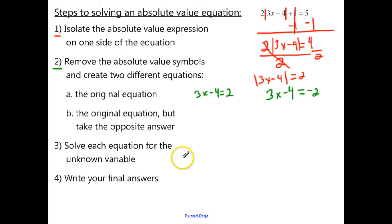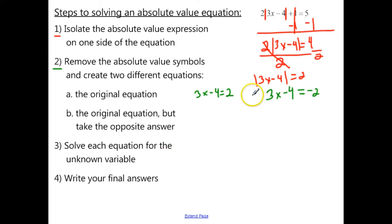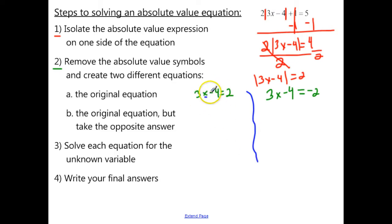Now let's move into step number 3: solve each equation for the unknown variable. I'm going to solve these equations separately. To solve for x in the first equation, I want to add 4 to both sides.